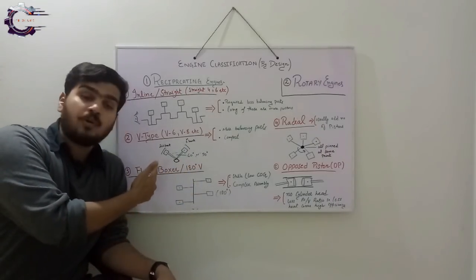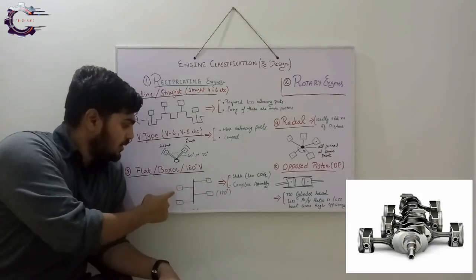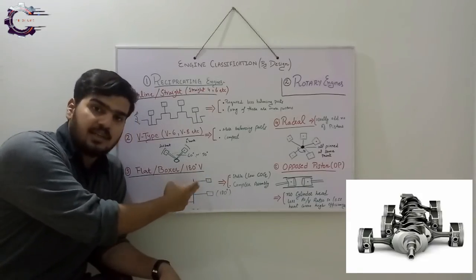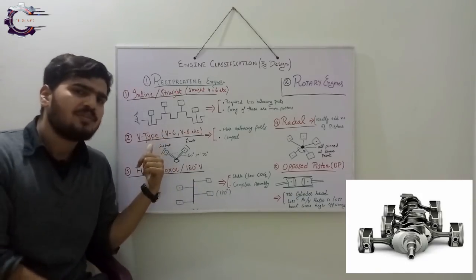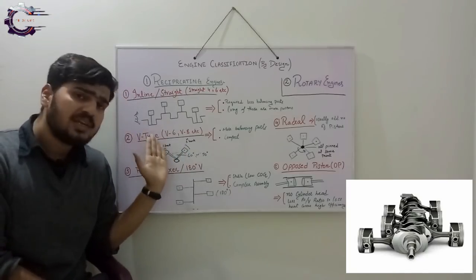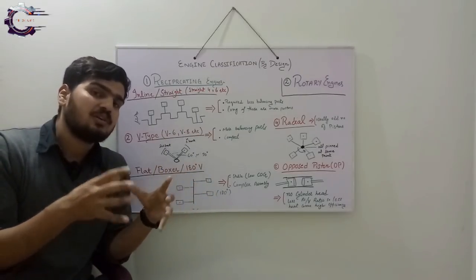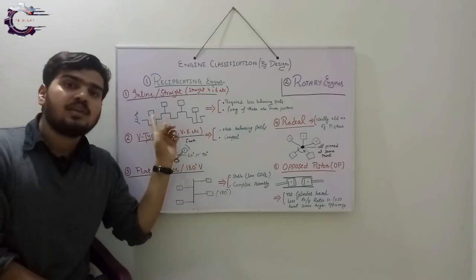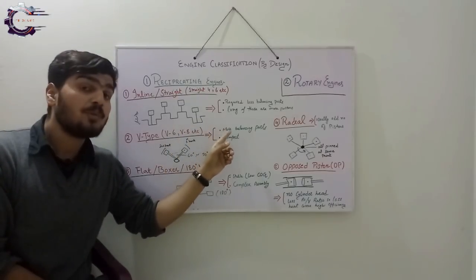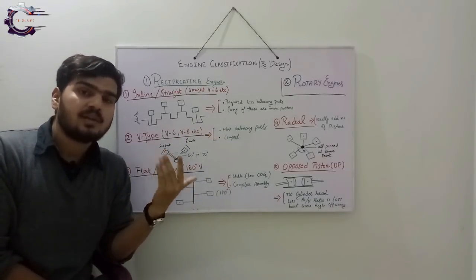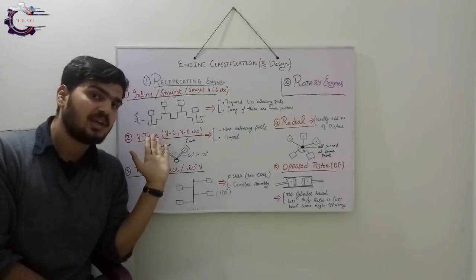Now coming towards the flat or boxer type engine — actually it is a 180-degree V. As you can see, the two banks are producing a 180-degree angle. So the flat or boxer type is a type of V-engine. The major advantage of V-type engines is that they are compact and will occupy less space in your cars, resolving the longer length problem with more pistons. But these type of engines require more balancing parts, which can create more vibration.